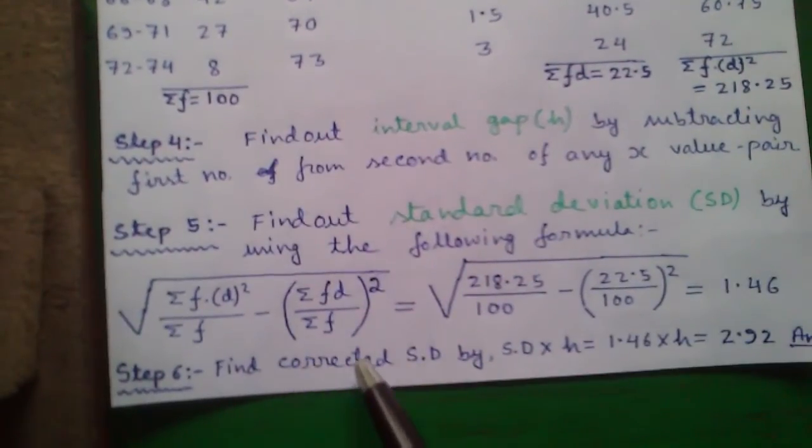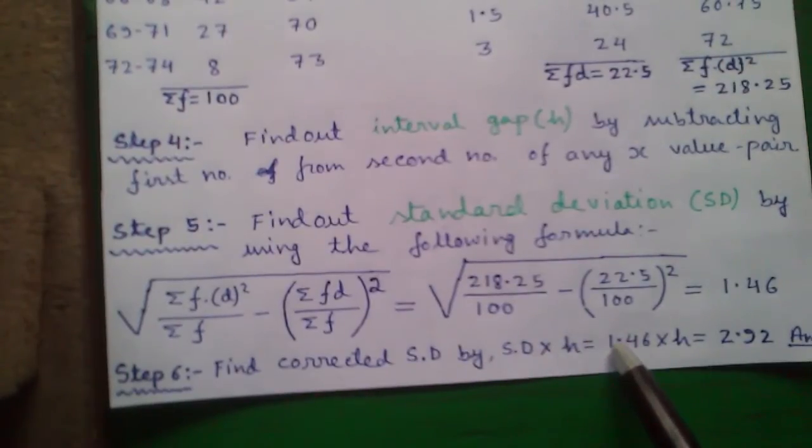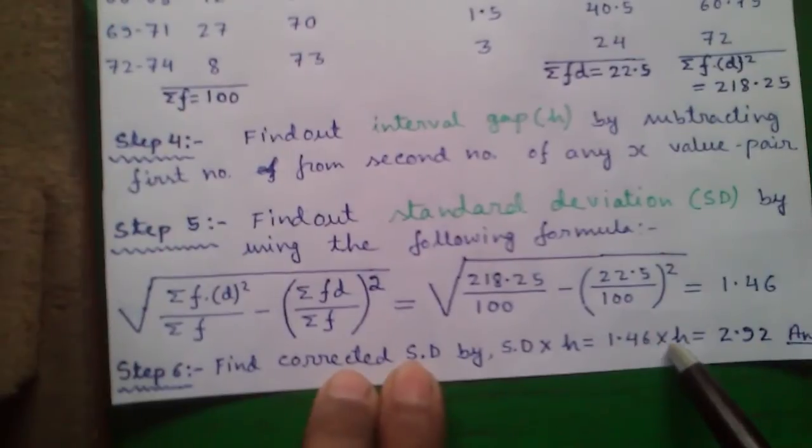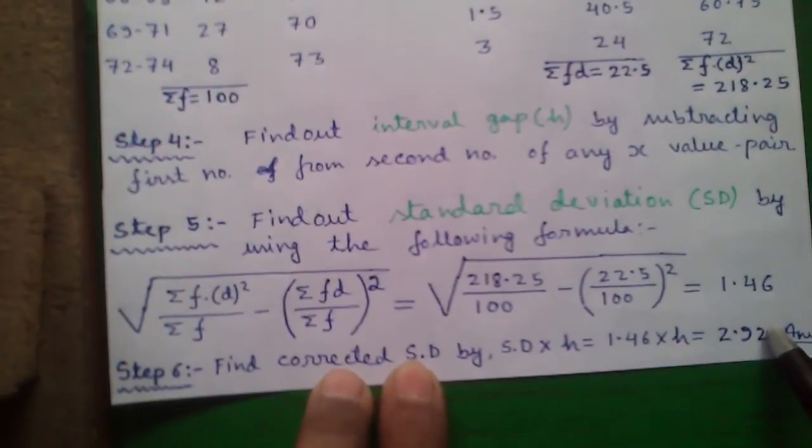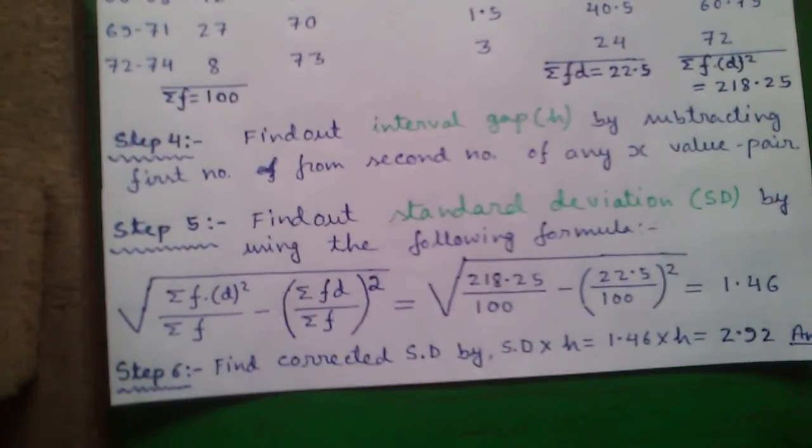And step 6: Find out the corrected SD value by SD into h which is 1.46 into h or 2 equals to 2.92 which is our answer.